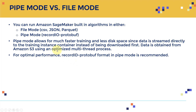One important element is that you can train in SageMaker in one of two modes: pipe mode and file mode. For file mode, the data needs to be in CSV, JSON, or Parquet format.